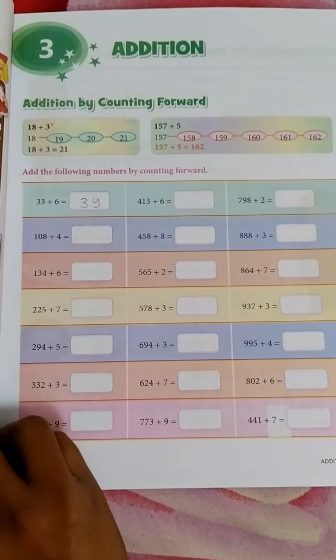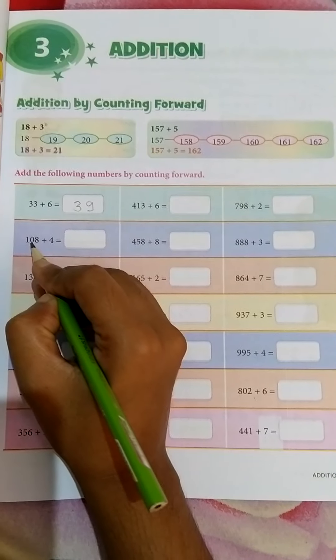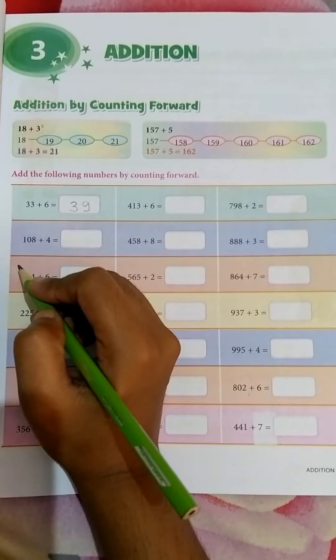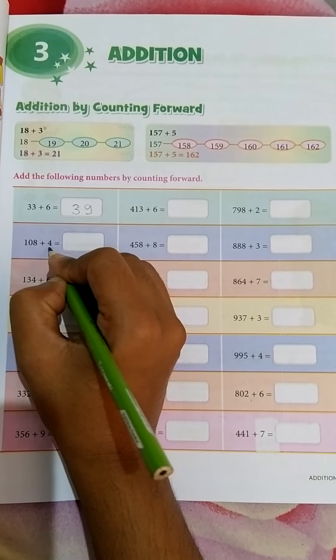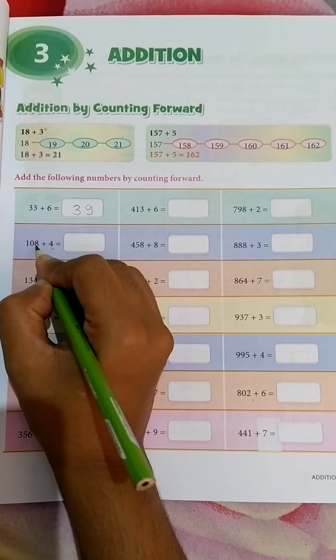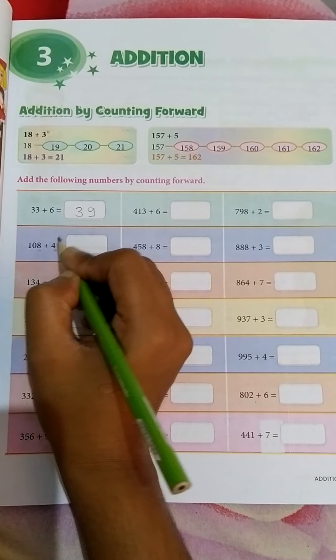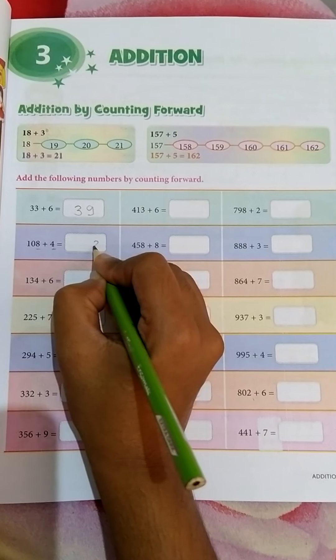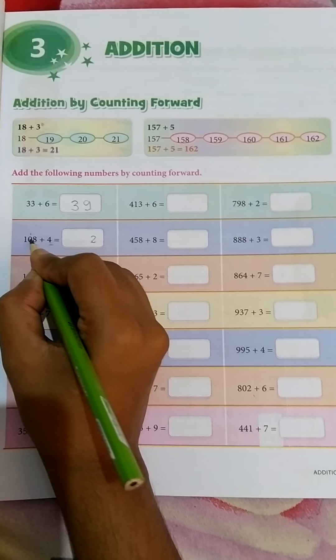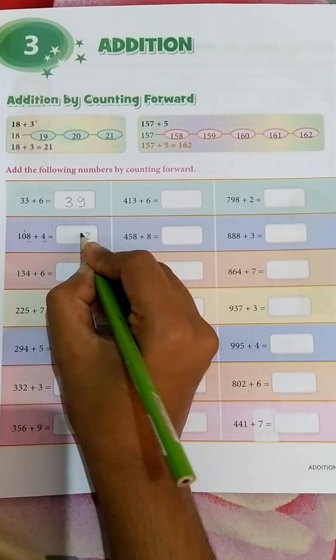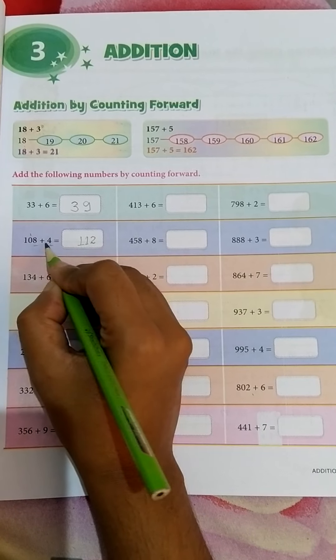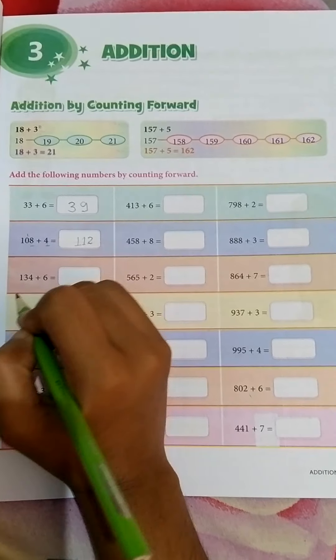There is one other way. There is given 108 plus 4. How will you add? See, this is ones and this is ones. You will add 8 and 4. 8 and 4, 12. You will write here 2. 1 will be carry. 1 will be added in tens. Then 0 and 1, it will be 1. And it will be 1, means 108 plus 4 is equal to 112.